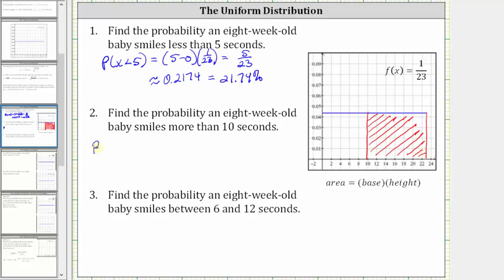So again, we have the probability that x is greater than 10 is equal to the area of the red rectangle where the area is equal to the base times the height. In this case, the base or the horizontal length of the rectangle is going to be 23 minus 10, or 13 units, times height, which is always the function value of 1/23rd.